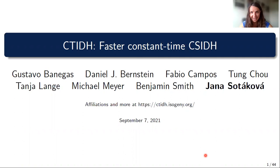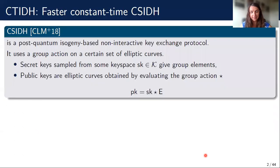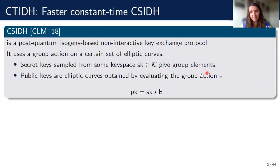Hi and welcome to CTIDE — faster constant time CSIDH. So what is CSIDH? CSIDH is a post-quantum key exchange protocol that is based on a group action on a certain set of elliptic curves. The secret keys, sampled from some key space, give group elements, and then we use the group elements to evaluate the group action to obtain public keys.